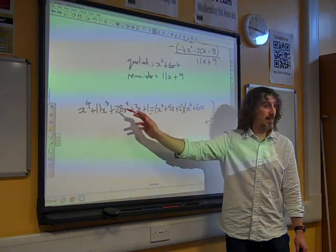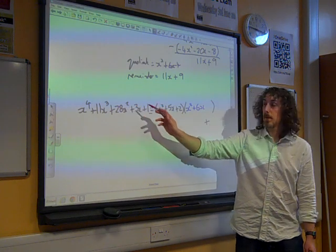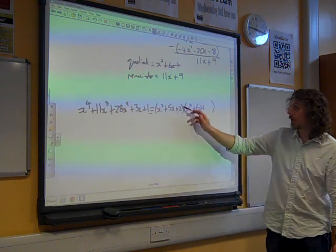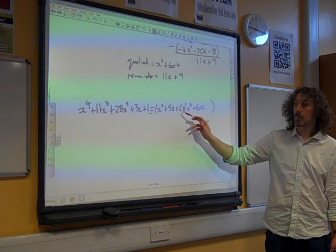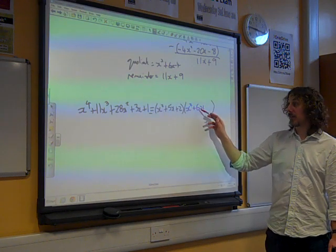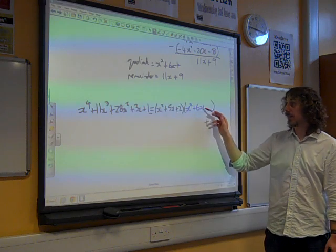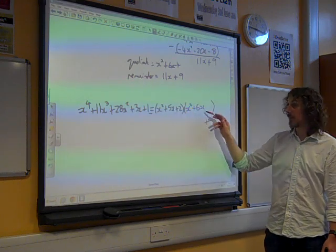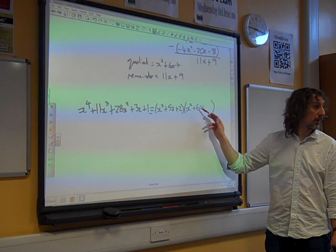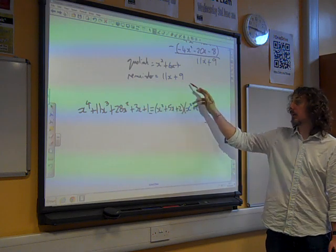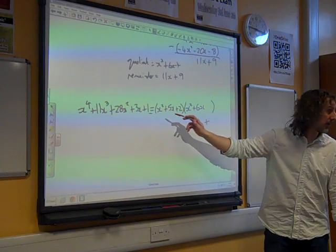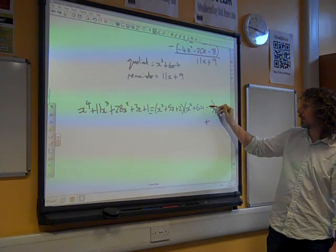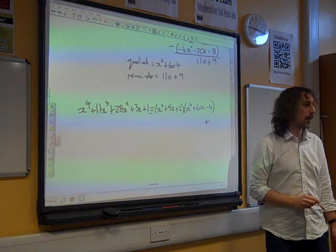We now look at the 28x squared. To get 28x squared, well, we've got 2 times x squared. That gives us 2 of them. Plus 30 times x squared, 5x times 6x. So that's 2 plus another 30, gives us 32. That's the only other way we can get it. It's that multiplication. We're supposed to end it with 28. We've got 32, so that must be a minus 4.